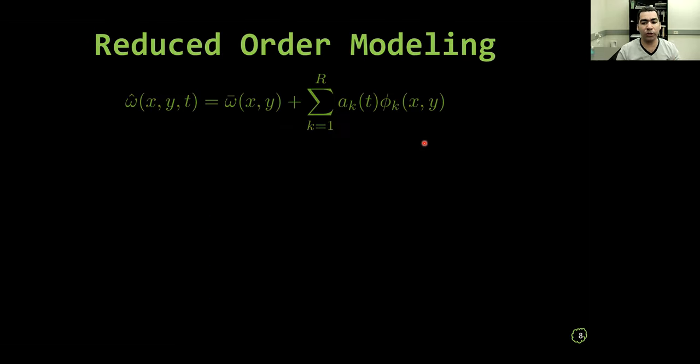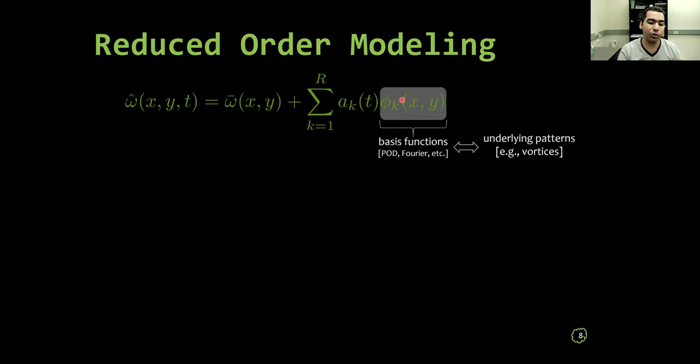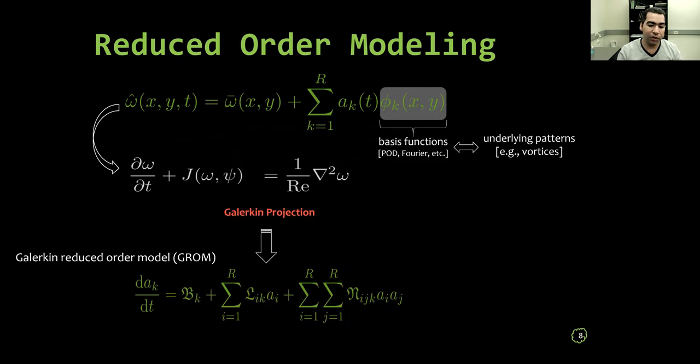Instead, in reduced order modeling, we are interested in systems where we can approximate our solution field as a superposition of the contributions of a few basis functions or modes. And these basis functions usually represent or capture underlying patterns or coherent structures in our flow. Then we substitute this approximation into the governing equations and apply something like Galerkin projection to get our Galerkin reduced order model or what we call GROM.